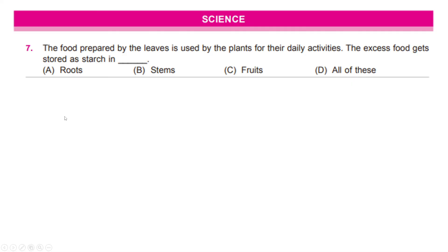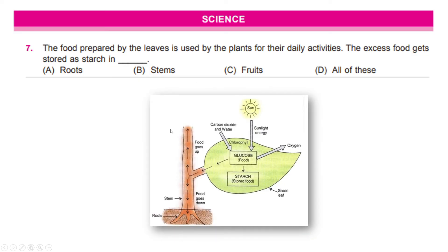Let us head to the next question which is about plants. This reads, the food prepared by the leaves is used by the plants for their daily activities. The excess food gets stored as starch and dash. You have to choose the right part. Well, if you know, mark the answer. To give you a bit of a background or to refresh your memory, look at this diagram.